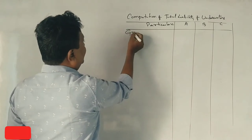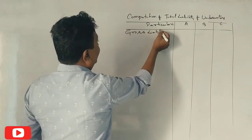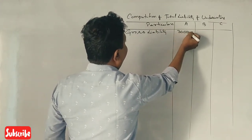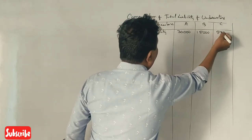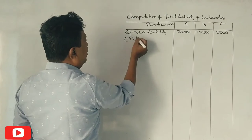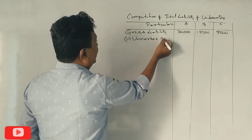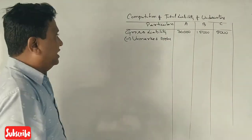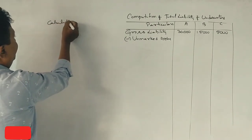What does it mean? Gross liability? 30,000. 15,000. 5,000. Correct? Yes, sir. Now, let's have a question. This is the calculation. A could be recommended 20,000.